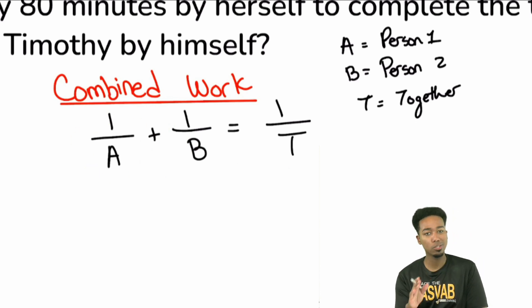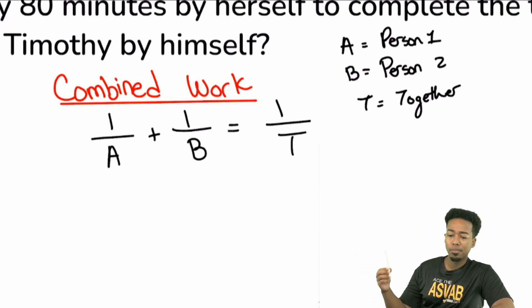Using this formula, what this represents is in one hour this is how much work the first person does. In one hour this is how much work the second person does. And then in one hour this is how much work they do together. So all you need to know is when you're dealing with a combined work problem, this is your formula. One over A plus one over B equals one over T, where T is the time that it would take them together.